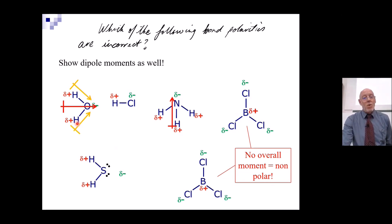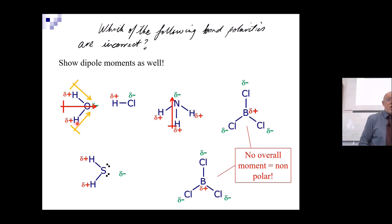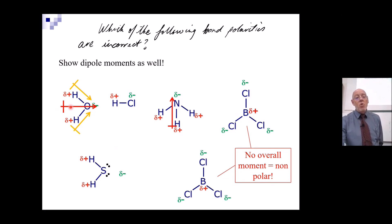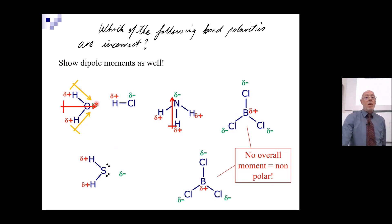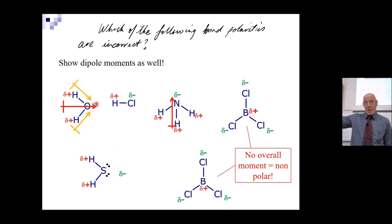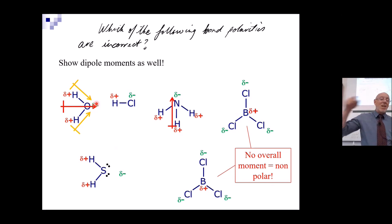What I've done here is shown the water dipole moments — I've drawn the individual bond dipole moments and then added them up to get an overall resultant. Now I want you to do that for each molecule: draw the individual dipole moments, then show the resultant dipole moment of the whole molecule.